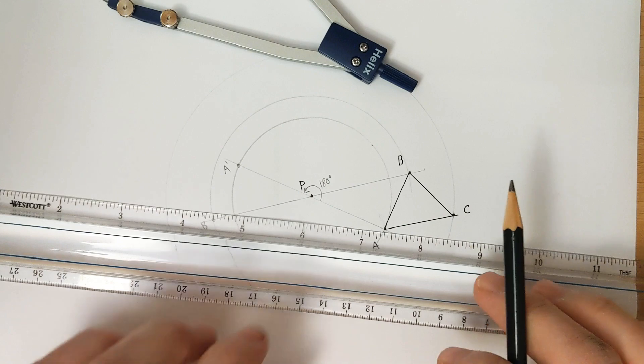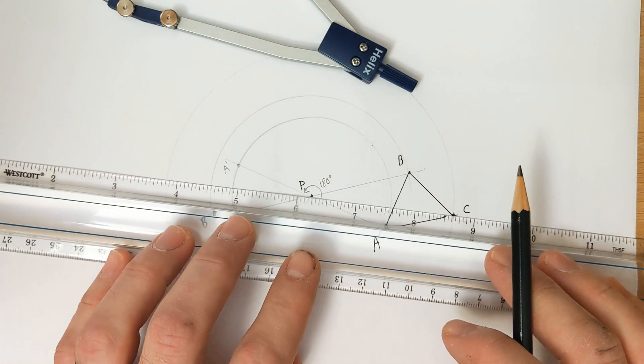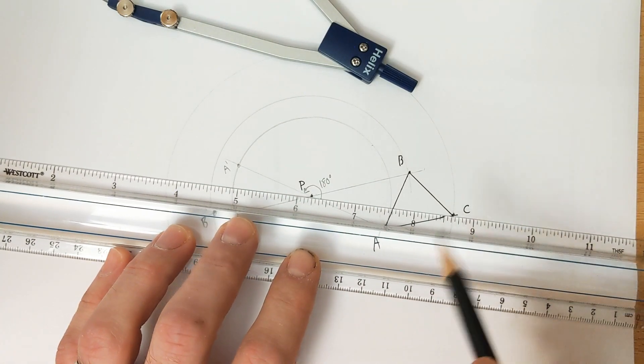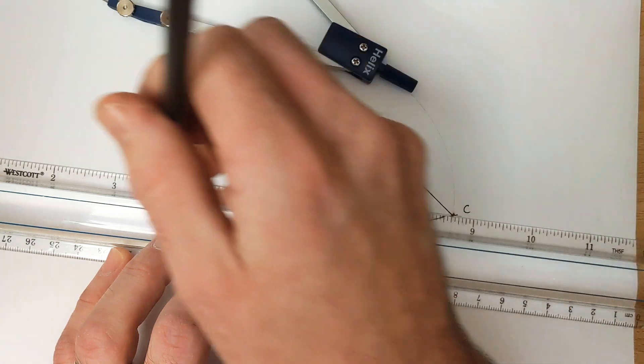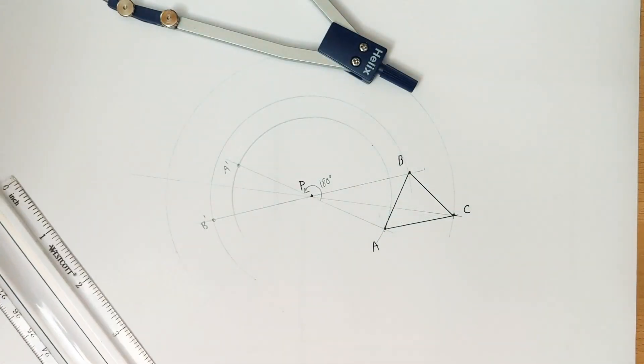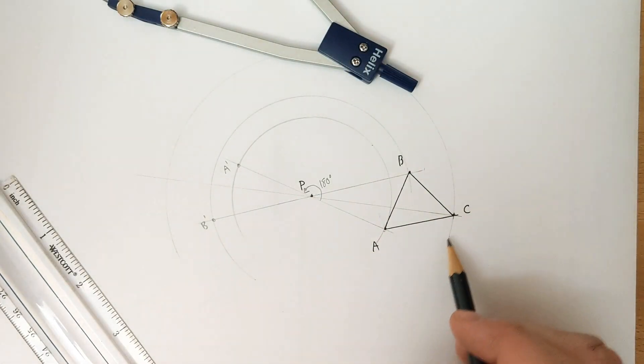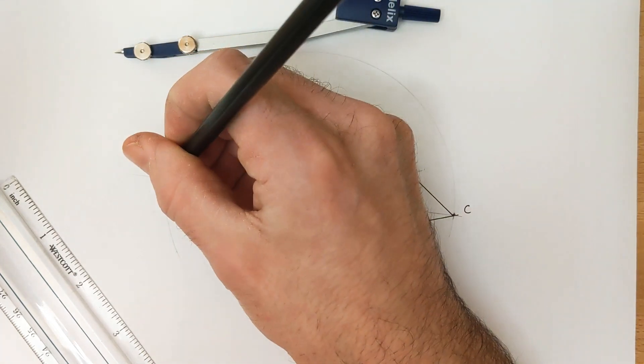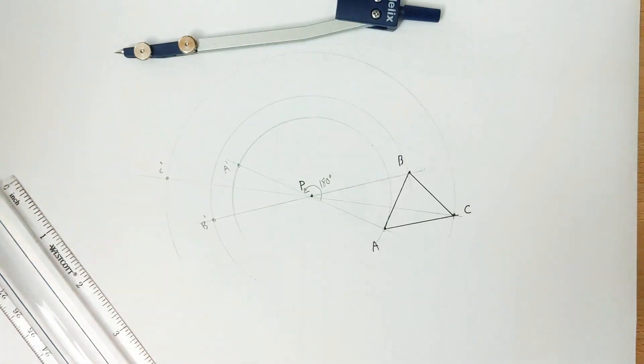And then our diameter from point C through the center of rotation. And finally, walking around C's circle to where we just drew our diameter, and that gives us C prime.